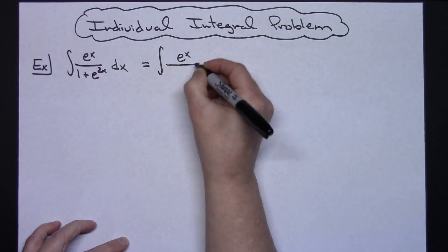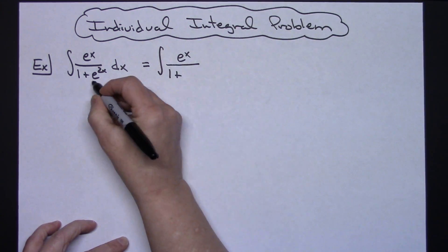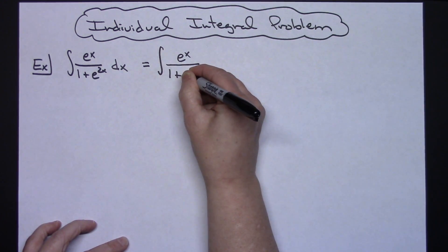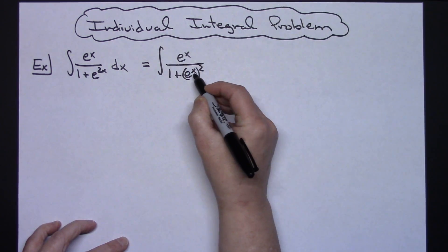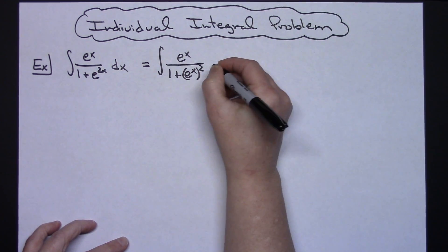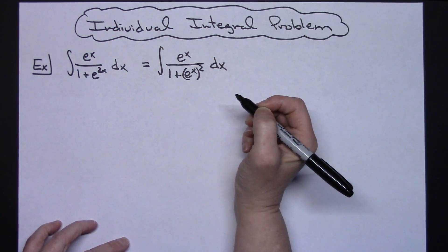I'm going to leave e to the x in the top. I'm going to do 1 plus, rewriting this with my laws of exponents, e to the x squared, because power raised to a power means multiply. So I have rewritten this and I still have an equivalent equation.